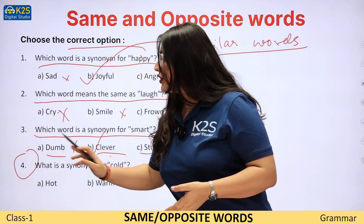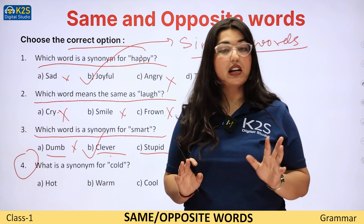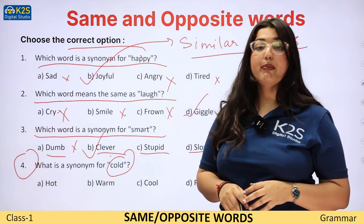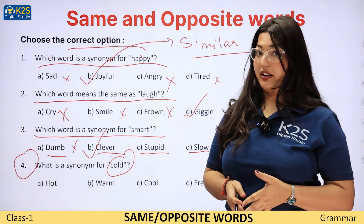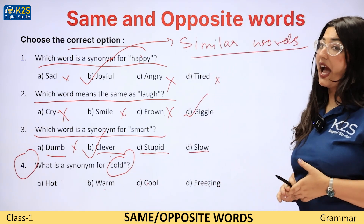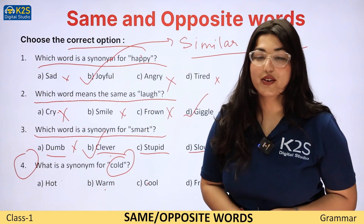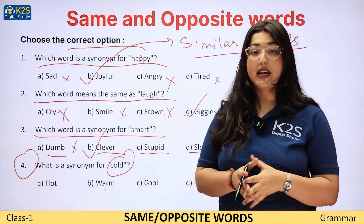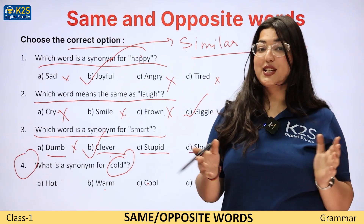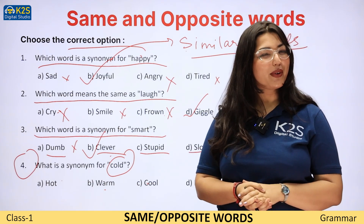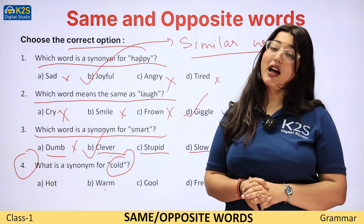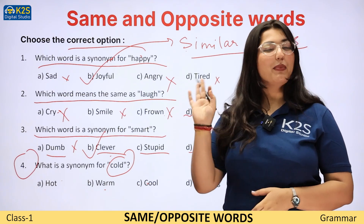Now this question you have to do by yourself. Aapne mujhe khud batana hai ki is question mein synonym for cold kya hona chahiye — hot, warm, cool, and freezing. We have to decide this. Alright dear students, I really hope ki is video mein aapko similar and opposite words achche se samajh mein aaye honge. Thank you so much for watching. I will see you in my other videos. Till then, take care. Bye-bye.